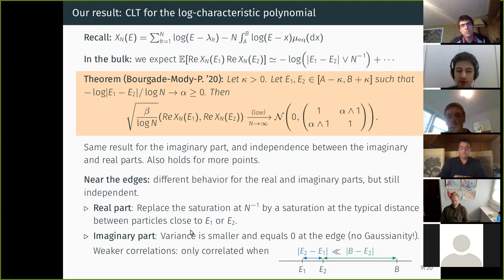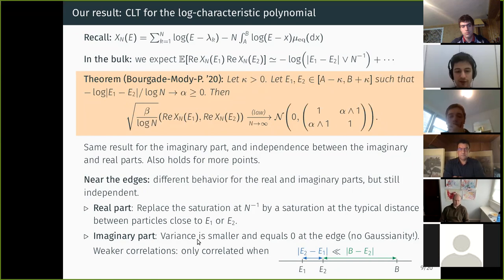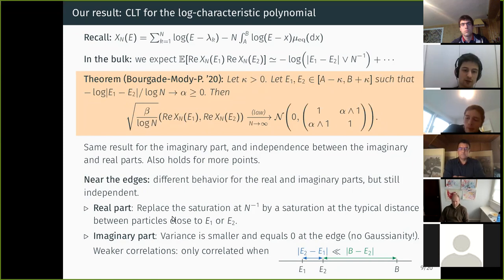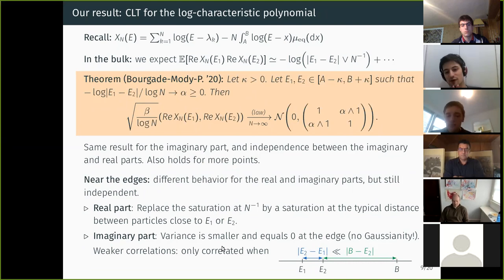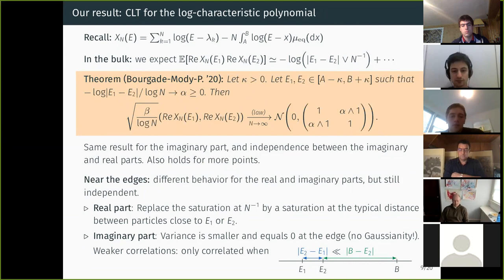One observation about the different edge behaviors: the real part has a symmetric singularity (log of absolute value) while the imaginary part has an antisymmetric singularity. For the imaginary part, fluctuations come from interactions between both sides of the singularity, so at the edge — where one side has nothing — you see no fluctuations. For the real part, one side alone is sufficient to produce a large contribution, so you still see large behavior at the edge.